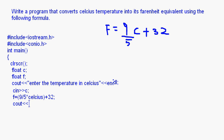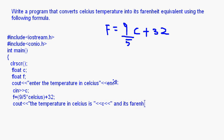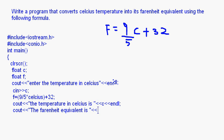Now that we have found the Fahrenheit equivalent, it just has to be printed. cout: "The temperature in Celsius is" then c, and then in a separate cout: "The Fahrenheit equivalent is" then f. Then we end the program and close the main method.